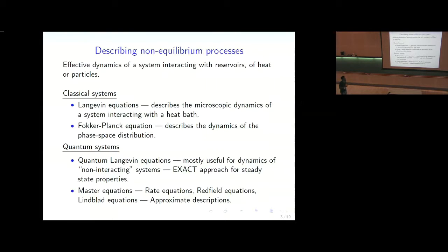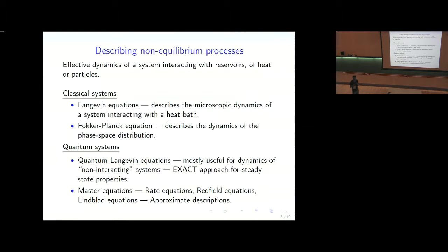In classical systems, a good way to describe such systems is a Langevin equation, which describes the motion of a Brownian particle interacting with a reservoir such as a fluid. Another description is the Fokker-Planck equation, which tells us how the probability distribution in phase space of a system evolves. This system is interacting with the reservoir, giving it an effective dynamic.